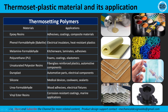Thermosetting plastics include materials like epoxy resin, phenol formaldehyde, melamine formaldehyde, and polyurethane. Epoxy resin is generally used in adhesives, coatings, and composite materials. Phenol formaldehyde — commonly called Bakelite — is used as an insulator. Polyurethane is used as foam, coating, and elastomer. Unsaturated polyester resin is used in fiberglass reinforced plastics and automotive components.